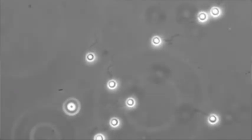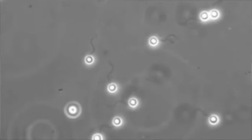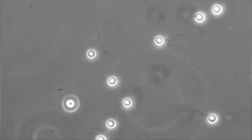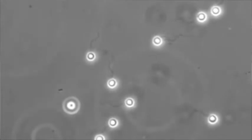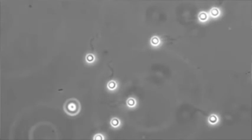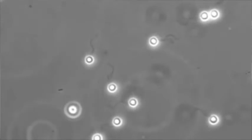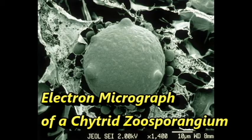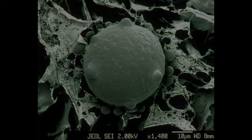Today we are going to be covering Chytridiomycota's reproductive cycles. Chytrids are unique because they are the only fungi with flagellated spores. They are also interesting due to the fact that they can reproduce sexually and asexually. We are going to start with some definitions and then take a look at the reproductive cycles.